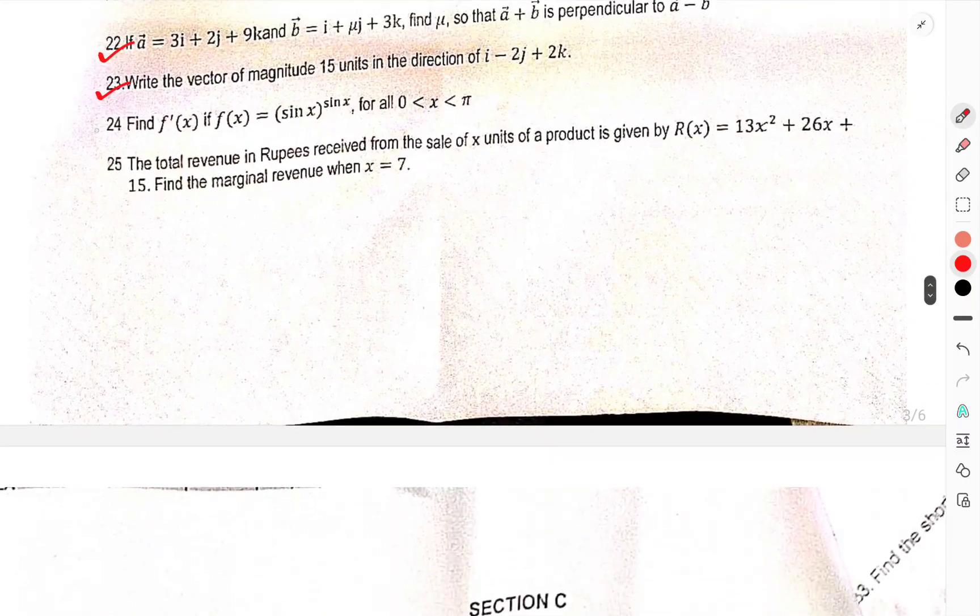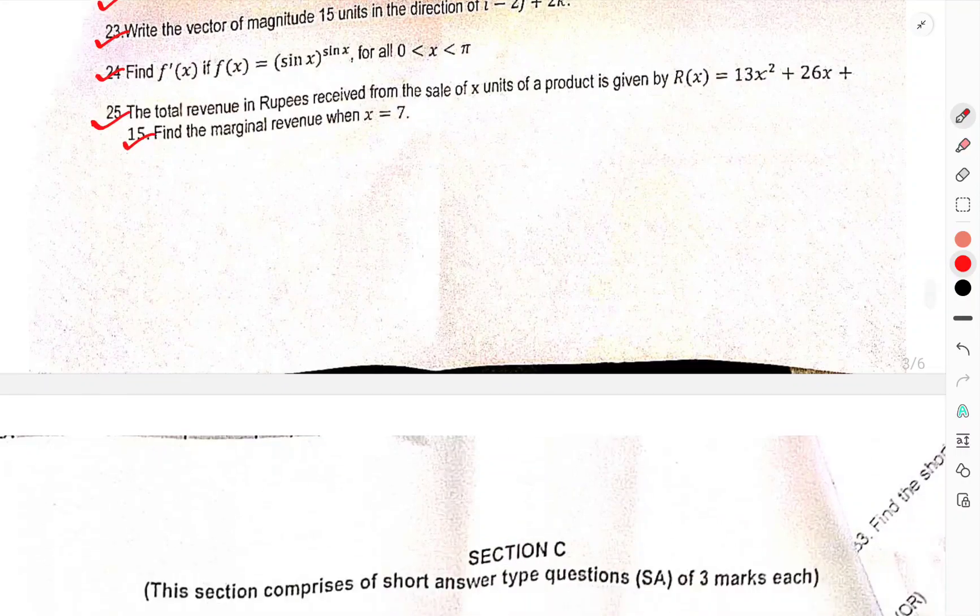Write the vector of magnitude of 15 units of direction this. Find the first differentiation of X, FX sin X is equal to this. The total revenue rupees received from the sales X unit product, this is this. Find the marginal revenue when X is equal to 7.